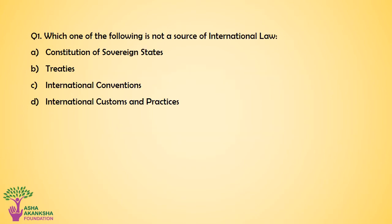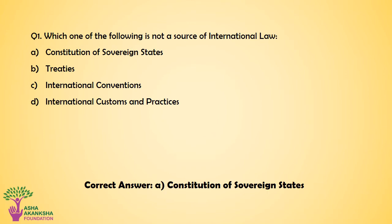Question number 1. Which one of the following is not a source of international law? Option A: Constitution of Sovereign States. Option B: Treaties. Option C: International Conventions. Option D: International Customs and Practices. The correct answer for this question is Option A — Constitution of Sovereign States.